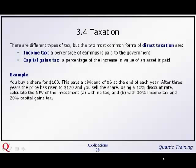We're going to look at a share as an example. We're going to buy a share for $100. This pays a dividend of $6 at the end of each year. And after three years, the price has risen to $120, and we sell it. And using a 10% discount rate, calculate the net present value of the investment. We're going to do this twice. The first time without any tax impact, the second time with 30% tax. So let's start off by doing this from first principles.